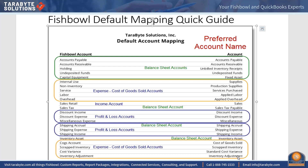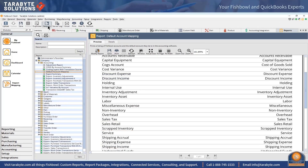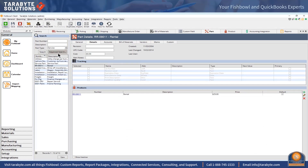Inventory adjustment is the account we hit when we do any other kind of inventory adjustment. Then we have the standard cost variance account. The inventory asset account is what we hit when we buy those inventory type parts. Each of those part types has a different way of functioning within QuickBooks.